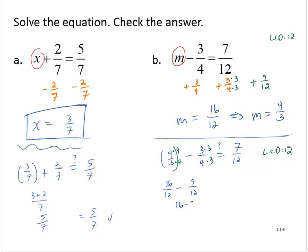which is 16 minus 9 over 12, which is 7 over 12. And so we do find that our solution checks.